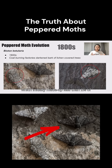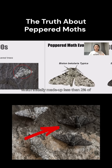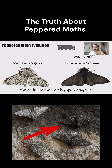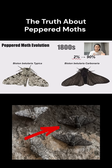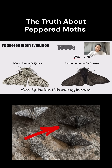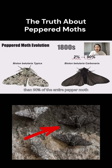While the darker variants tend to blend in a little bit more. Now these darker moths, which initially made up less than two percent of the entire peppered moth population, could now camouflage effectively against the sooty bark, which allowed them to escape the notice of their main predators — birds. This is natural selection in real time. By the late 19th century, in some areas, these dark moths constituted more than 90 percent of the entire peppered moth population.